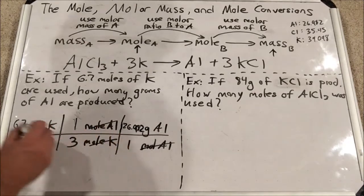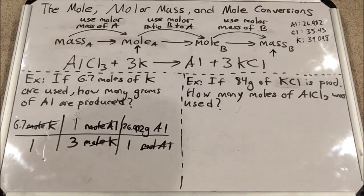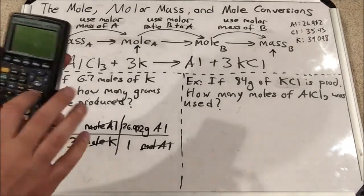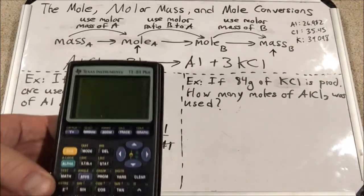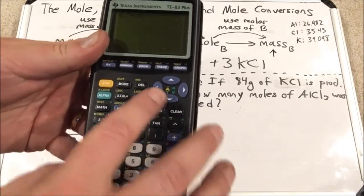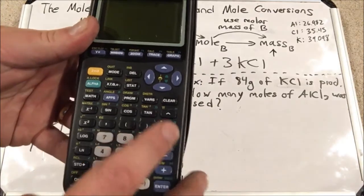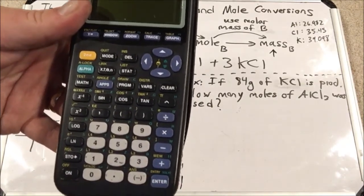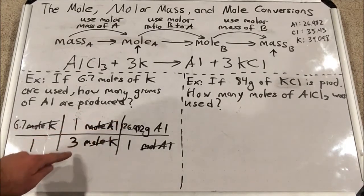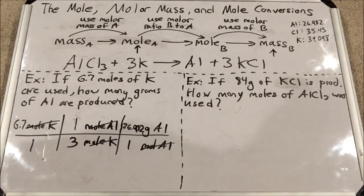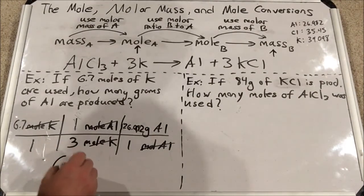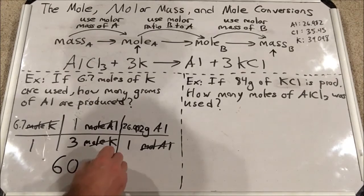After cross-canceling units, I multiply 6.7 times 26.982 then divide by 3, which gives 60.2598. My initial measurement had only two sig figs, so I round to the ones place — giving exactly 60. With units, moles cancel, leaving grams aluminum. The answer is 60 grams of aluminum.